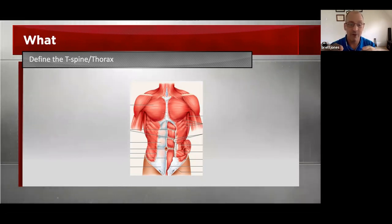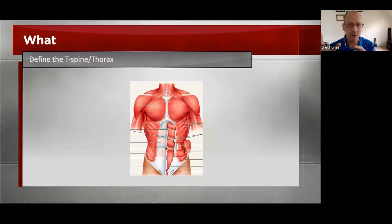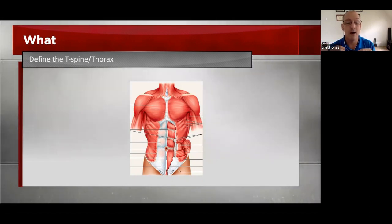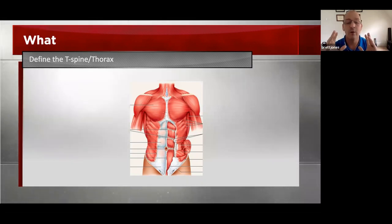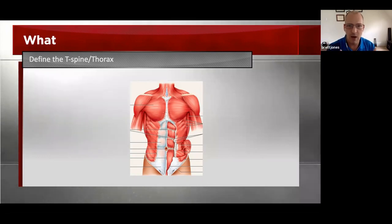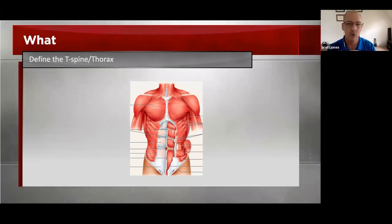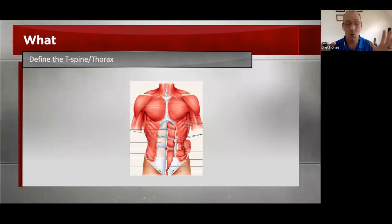We're going to get very specific on some of our T-Spine or thoracic mobility drills. We use thoracic mobility in a lot of different ways — it's part of our spinal engine or how we produce gait. Whether we're talking about walking, running, throwing a ball, throwing a kick, power production for something like golf, we generate energy from the ground, move it through a solid midsection, and use that coiled T-Spine to move energy through the body to our targets.